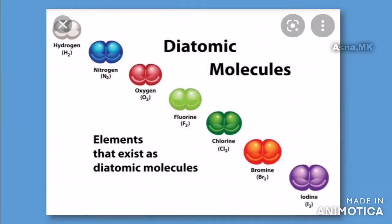We are going to learn about diatomic molecules. They are familiar examples: Hydrogen, Nitrogen, Oxygen, Fluorine — these are diatomic molecules.